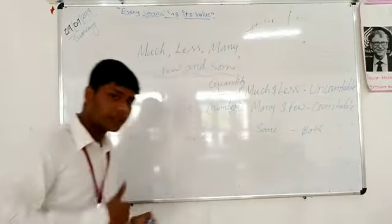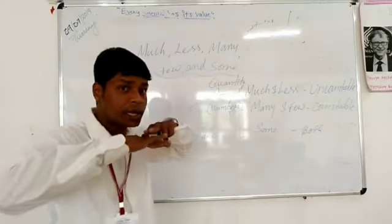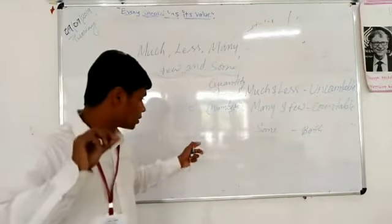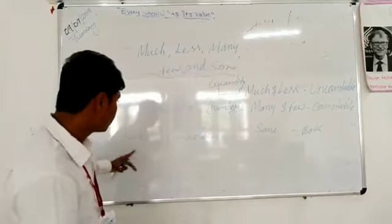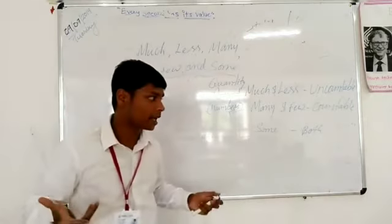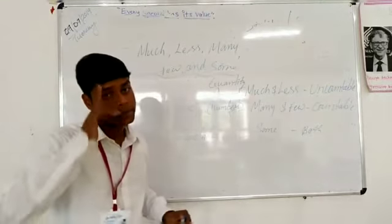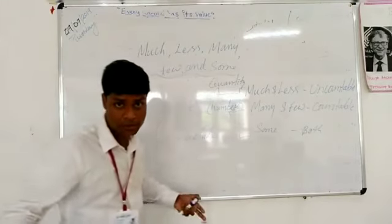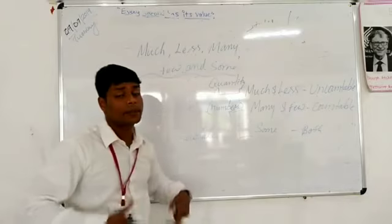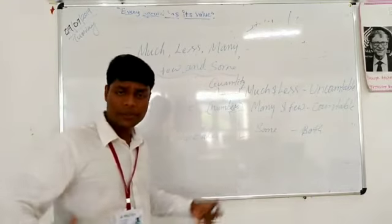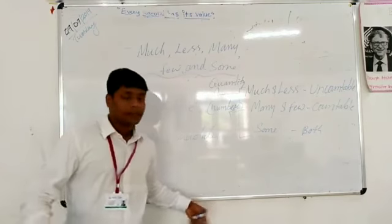So 'some' covers the middle part: it works with both uncountable nouns like rice and countable nouns like chocolates, when the exact number or amount is uncertain. Remember that. I hope you understood — if not, please comment and I will give you an explanation. If you want explanations on other topics, let me know. I am always available to help. Thank you, bye!